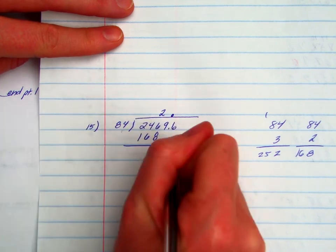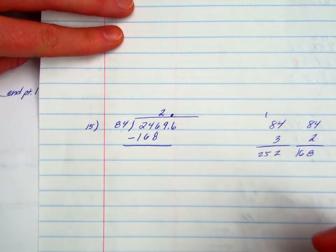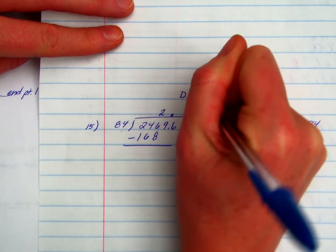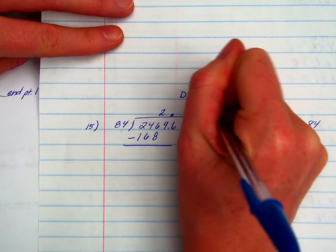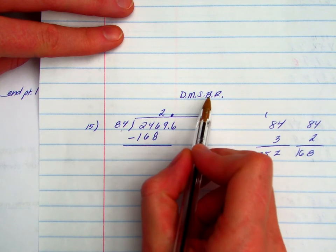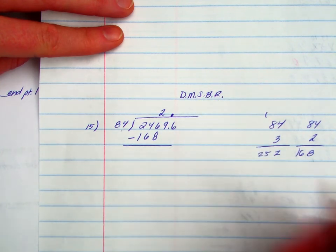So what's happening here is I'm doing 84 can go into 246 two times. 2 times 84 is 168. And then I'm going to subtract. Remember with this, it's the divide, multiply, subtract, bring down, repeat. Devious monkeys swipe bananas repeatedly.